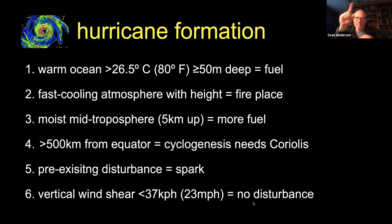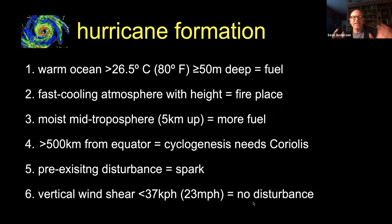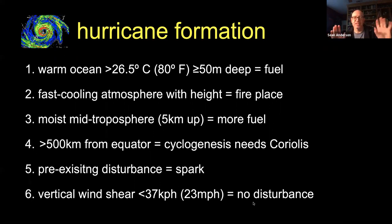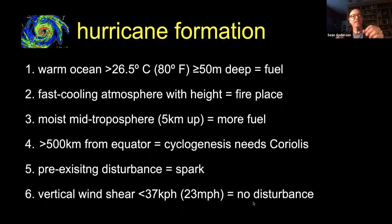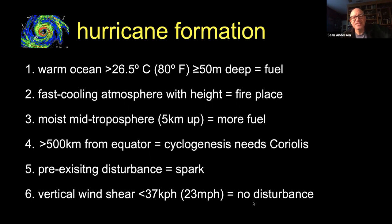So we have the fuel, the fireplace, the location where Coriolis can make the system spin, and then we get that spark — a dust storm from Africa or some disturbance. Finally, we need no vertical wind shear. We can't have a windy condition when the hurricane is forming, because strong high-elevation winds will disturb it and prevent cyclogenesis. The National Hurricane Center defines that as wind shear less than 37 kilometers per hour.